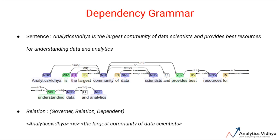Every dependency can be represented in the form of a triplet which contains a governor, a relation, and a dependent. This means that a dependent is connected to the governor by a relation — in other words, they are subject, verb, or object. For example, in the sentence 'Analytics Vidya is the largest community of data scientists,' Analytics Vidya is the subject and plays the role of governor, and 'largest community of data scientists' is the dependent or the object.